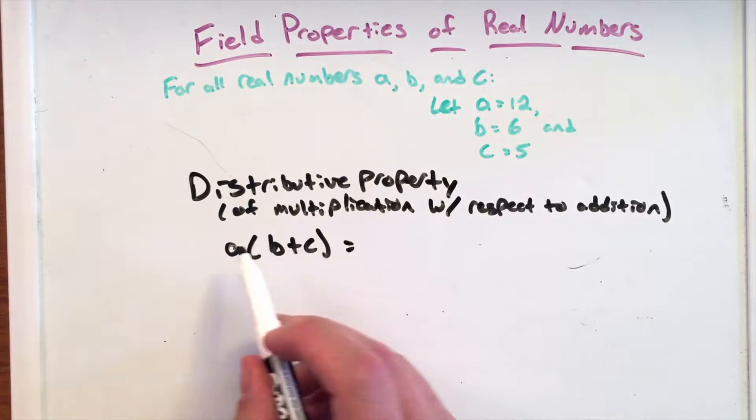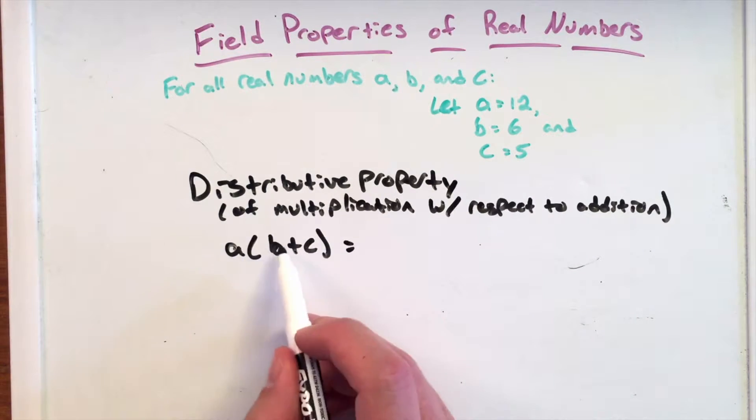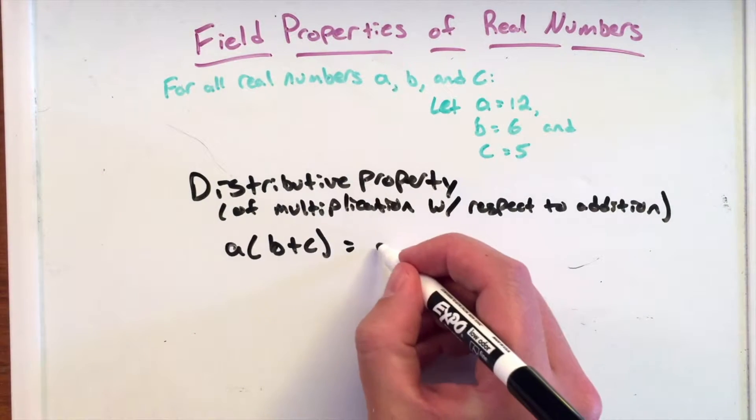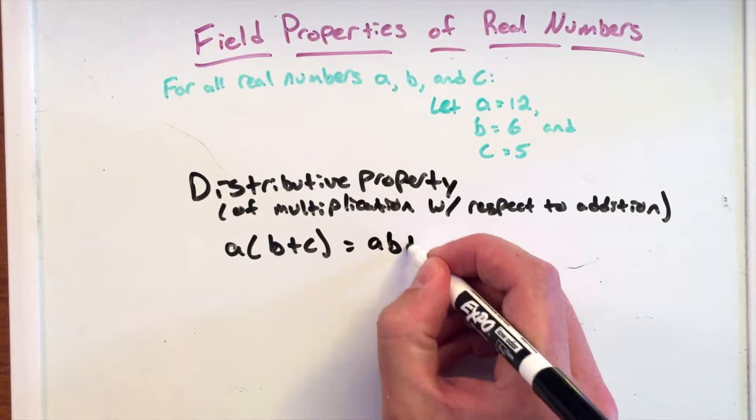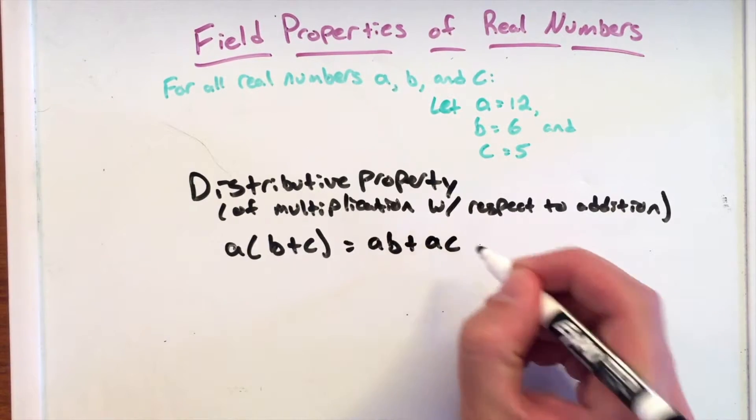This is the same thing as if we distribute this multiplication to both parts of B plus C: A times B plus A times C.